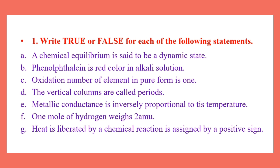Number D: The vertical columns are called periods. False — horizontal rows are the periods. Number E: Metallic conductance is inversely proportional to its temperature. True.